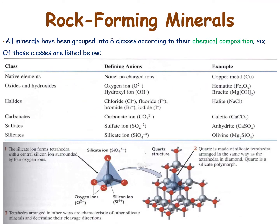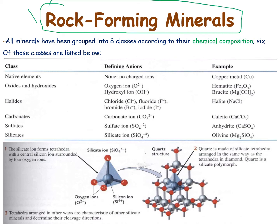There are basically some common minerals that form rocks. As we know, minerals are the building blocks of rock material, and there are some minerals that lead to the formation of rocks. All minerals have been grouped into eight classes according to their chemical composition, of which six classes are listed here.